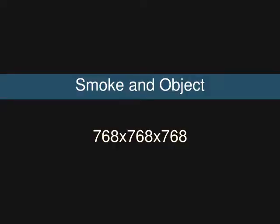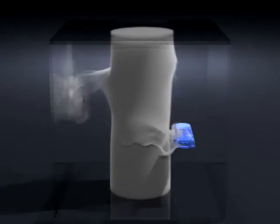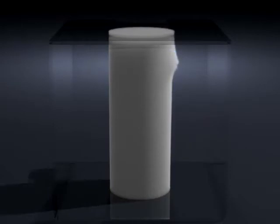Here we show a moving object displacing a cylinder of smoke. Our method is able to efficiently handle the changing Poisson matrix needed for the moving Neumann boundary conditions.